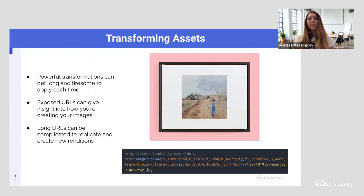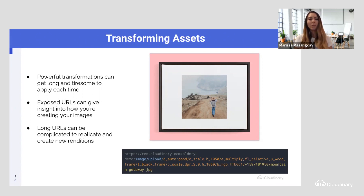Powerful transformations can get long and tiresome to apply each and every time. As you can see in this URL, there's a lot going on — setting the quality, doing different crop modes, setting the height, doing overlays, setting the DPR. That might not be something you want to create each and every time. For those who want to keep transformation capabilities more internal, this also exposes exactly what you're doing to create the result.